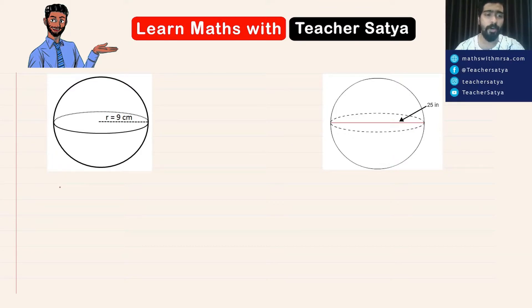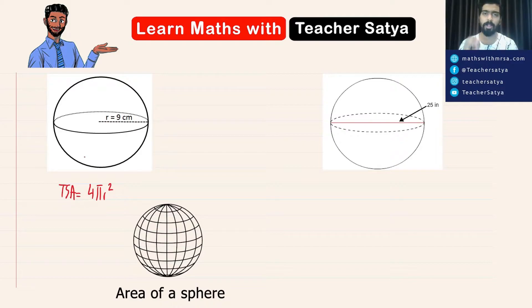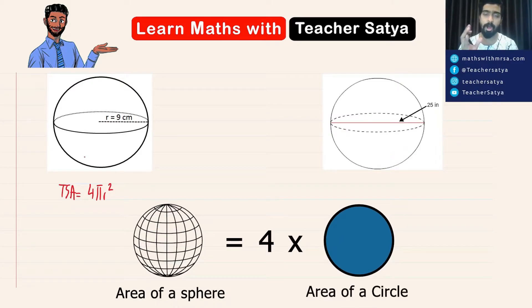The formula to find the surface area of a sphere is 4πr². What this means is that the surface area of a sphere will be equal to 4 times the area of a circle with the same radius.